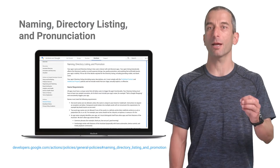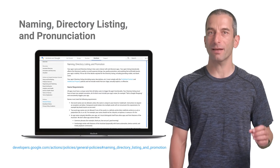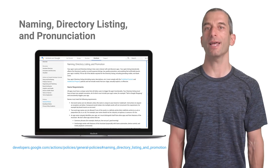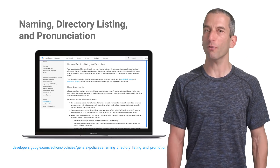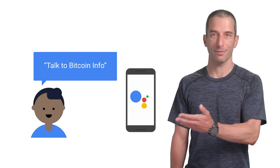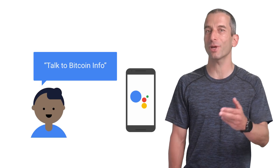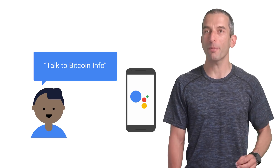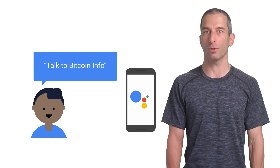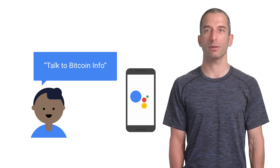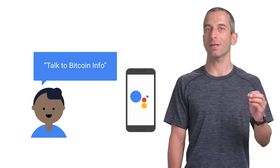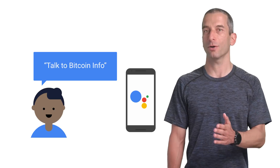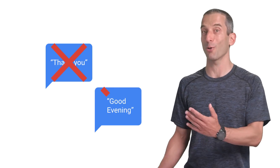Naming, directory listing, and pronunciation. All apps must have a unique name that will allow users to trigger the app functionality. Your directory listing must have at least one sample invocation, all of which must include your app name. For example, 'talk to Bitcoin info,' which consistently triggers your app. A few important things to remember about names: one-word names are not allowed unless the name is unique to your brand or trademark. An app name uniquely identifies your app, so it must distinguish itself from other apps and features of the assistant. You should avoid very common phrases like 'thank you,' 'good evening,' or 'oh my god.'